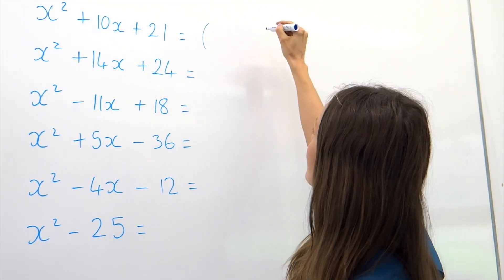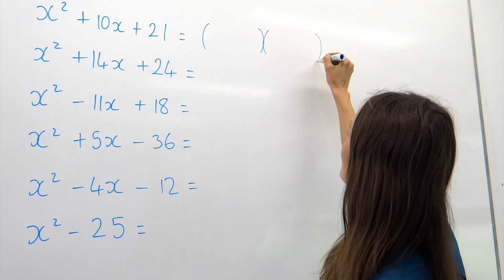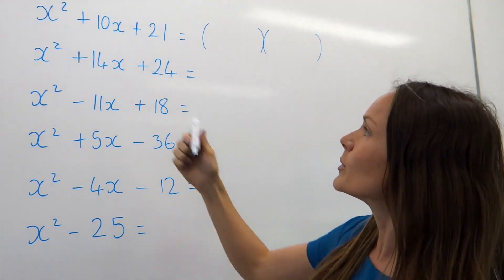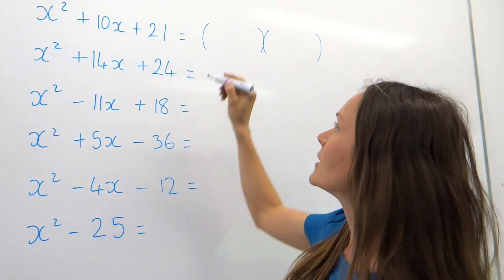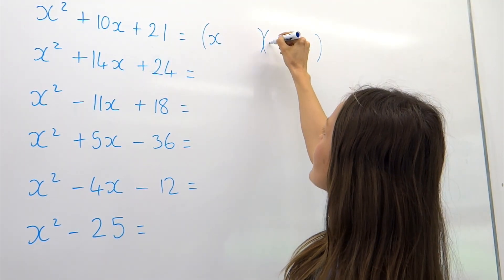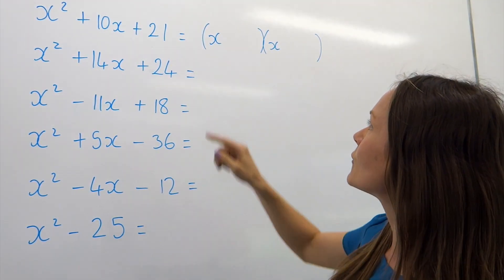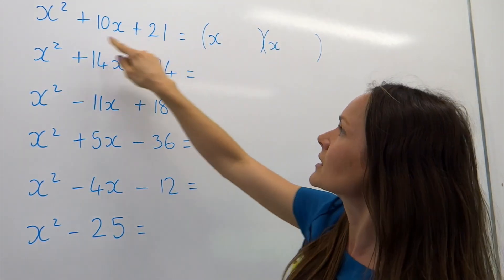In the first question, I'm going to write out my double brackets and the first part is quite easy. How do you get x squared? Well, you multiply x by x. So that first part is easy. x times x gives us x squared.